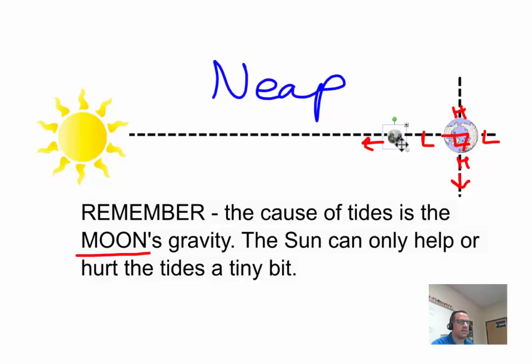7 days later, they're all lined up again. Highest high, lowest low. It's a spring tide. And back here, lowest high, highest low tide, the neap tide. So you have a neap tide every 14 days. And you have spring tide every 14 days.